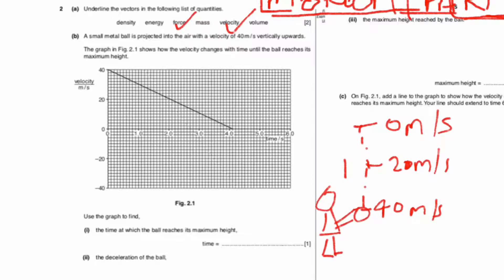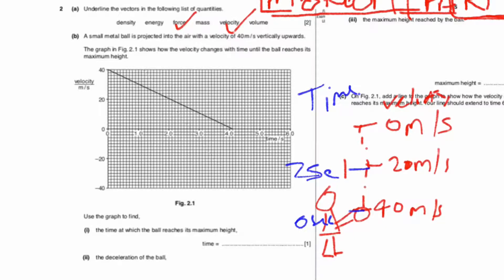So this graph shows velocity on the y-axis and time on the x-axis. The time is 4 seconds — initially at 0 seconds the ball is thrown, at 2 seconds the ball is at the center point, and at 4 seconds it has reached the maximum height where velocity is 0.